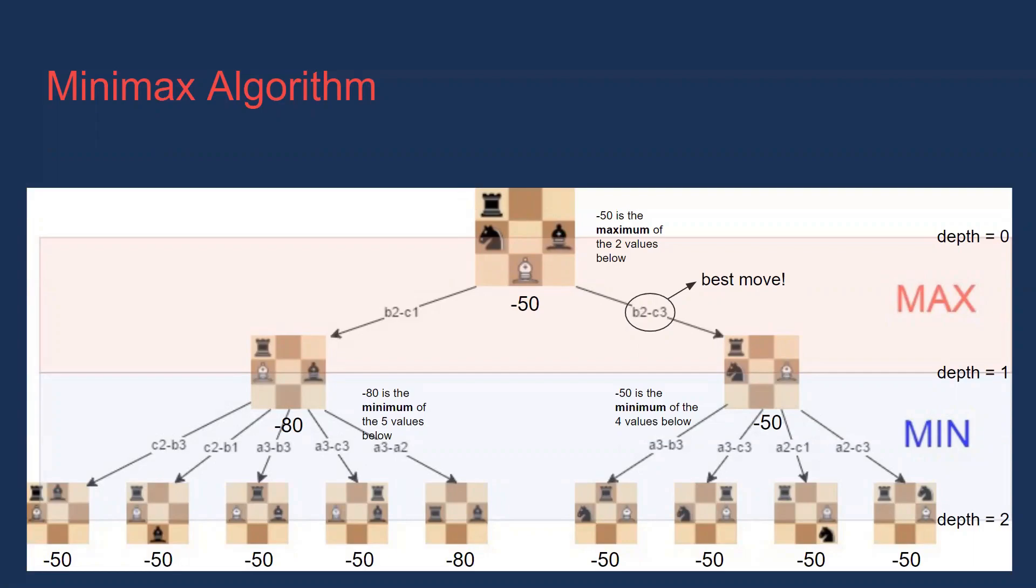Once this happens, we call our evaluation function on all of the game states at the bottom of the tree. This is where the values at the bottom of the screen came from. These values get passed up the tree based on whether they are minimum or maximum. In our case, at depth equals one, it is black's turn, which means we want to pick the minimum. For the left subtree, negative 80 is the smallest child value, so it gets passed up the tree. For the right subtree, negative 50 is the smallest child value, so it gets passed up the tree. This is where the two values in the middle of the screen came from.